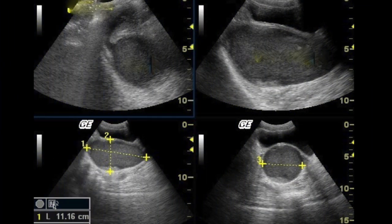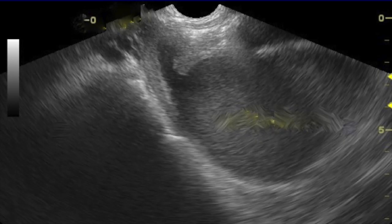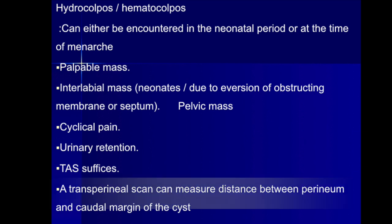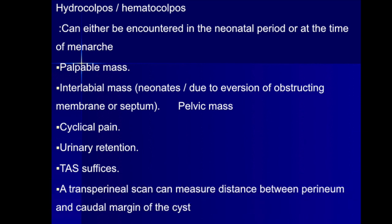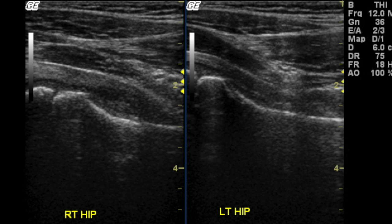Case number seven: a young girl presenting with lower urinary tract symptoms and a palpable lump. This is a spotter. If you called it either a hydrocolpos or a hematocolpos you would be correct, as this can be encountered in the neonatal period or at the time of menarche. Presentation can be as a palpable mass, or very rarely as an interlabial mass due to eversion of the obstructing membrane or septum; patients can also present with cyclical pain. Given the relationship of the cystic mass to the urinary bladder, urinary retention is a very common presentation. Transabdominal ultrasound generally suffices, but a transperineal scan can measure the distance between the perineum and the caudal margin of the cyst.